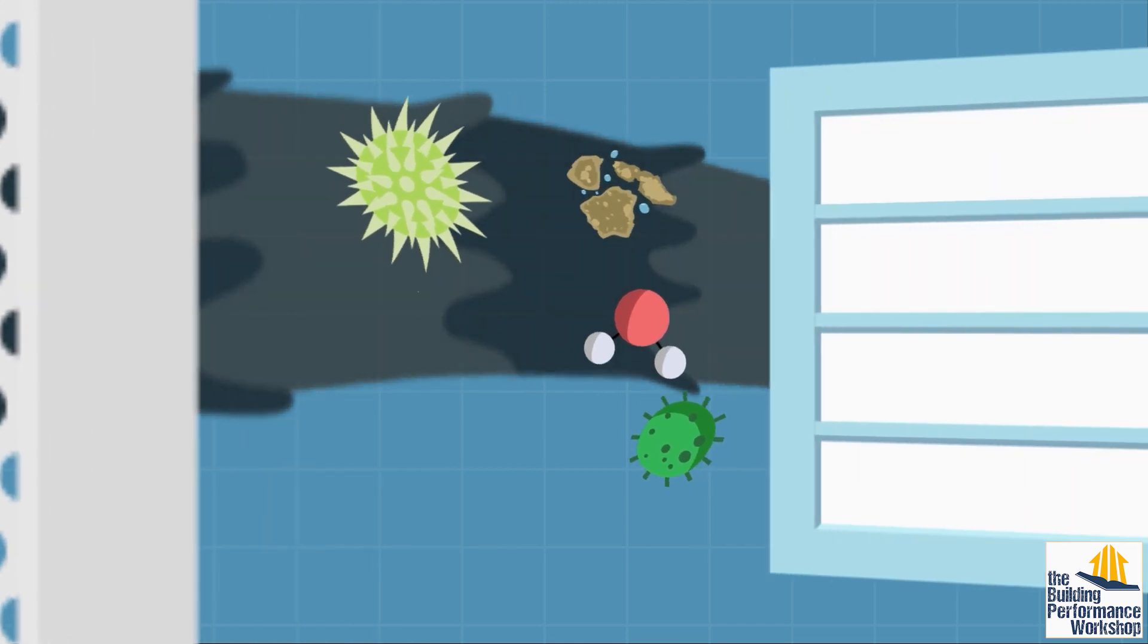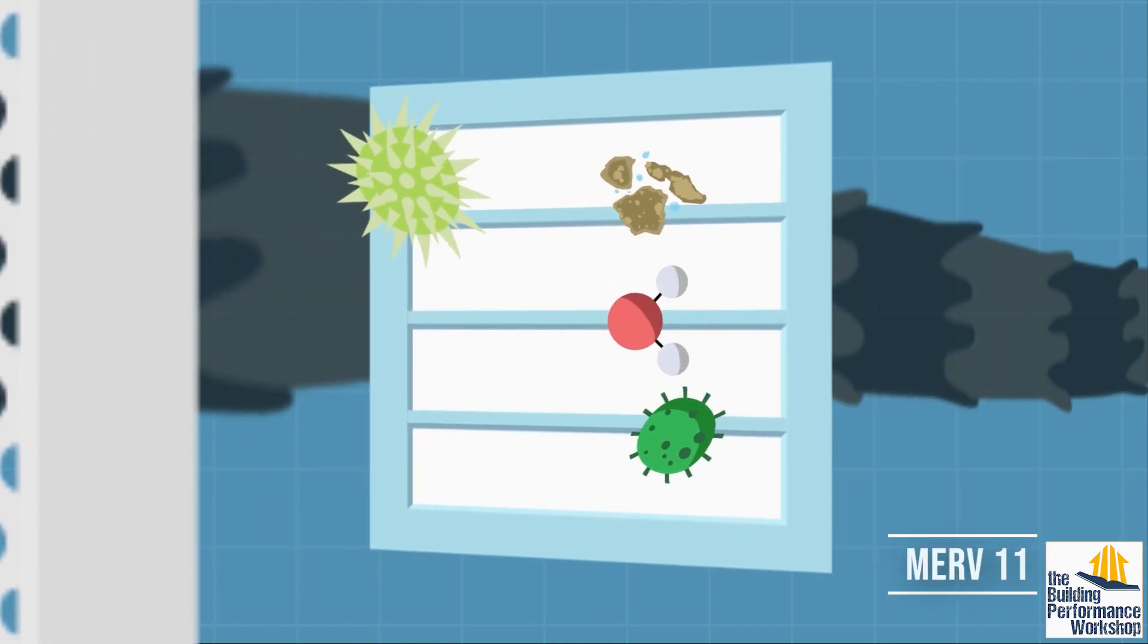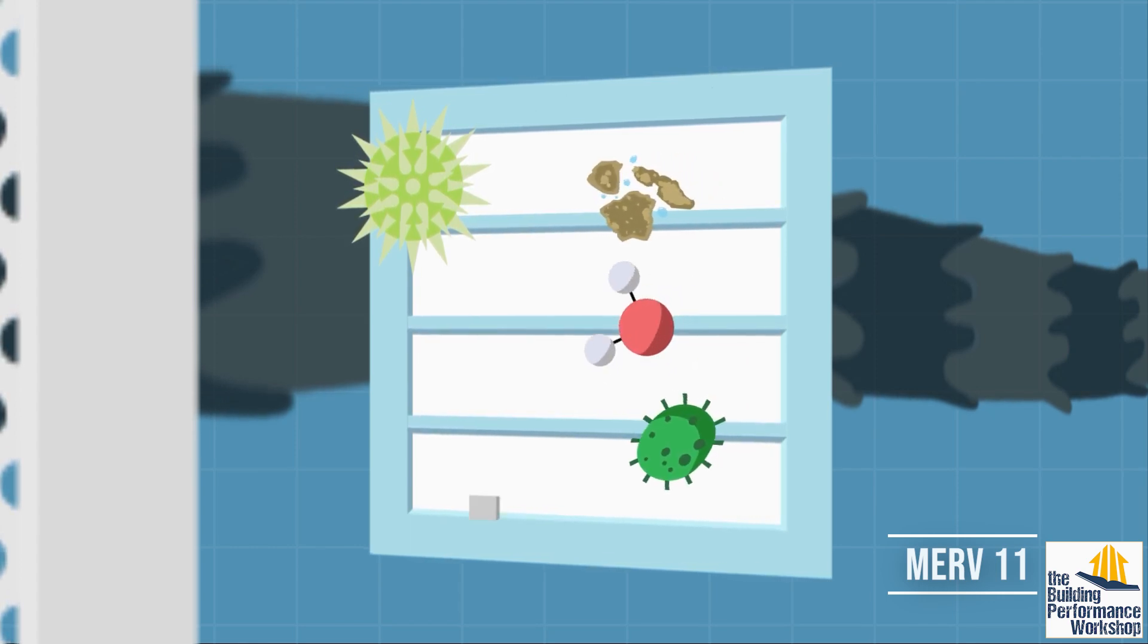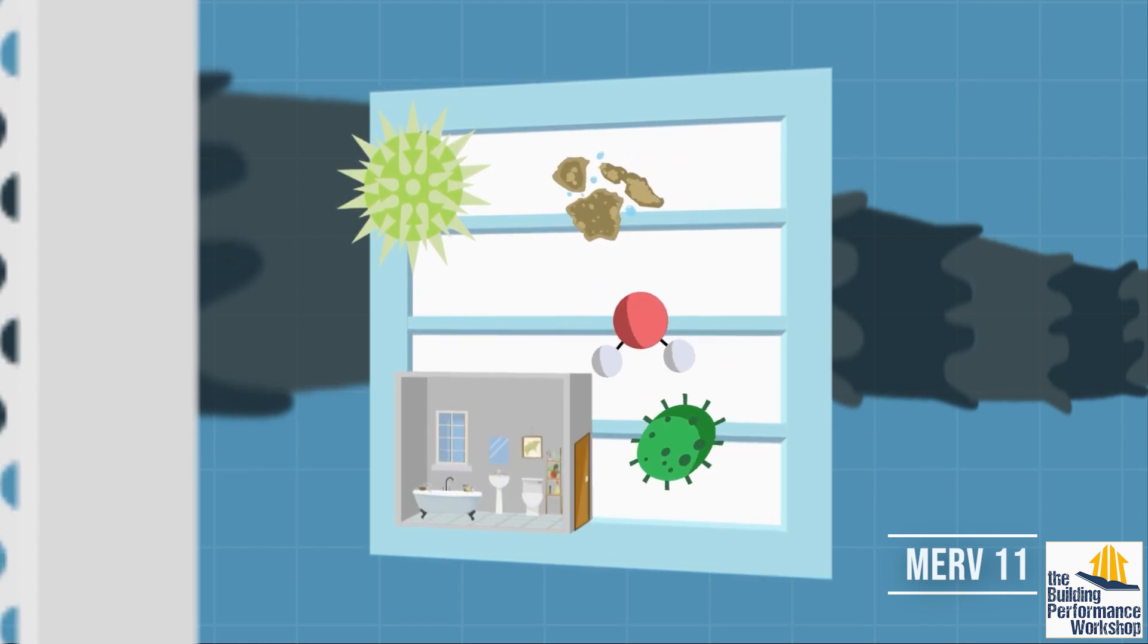A better filter with a rating of MERV 11 can start to make your air healthier. A single grain of pollen has become magnified now to the size of a typical bathroom in that building, and it gets stuck here.